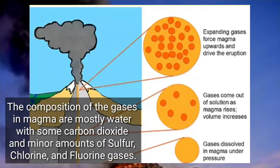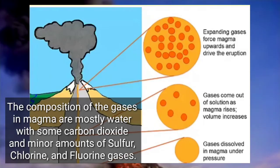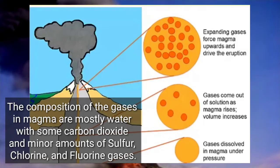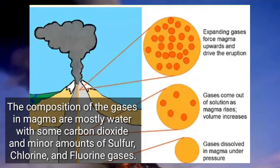The composition of the gases in magma are mostly water, with some carbon dioxide and minor amounts of sulfur, chlorine, and fluorine gases.